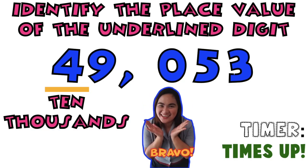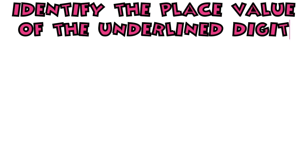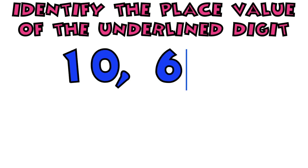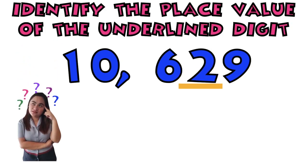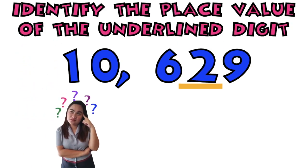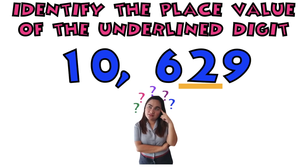Bravo! How about this one? Let's have number 3. Again, you're going to identify the place value of the underlined digit. I have here 10,629. What is the place value of digit 2? Timer starts now.